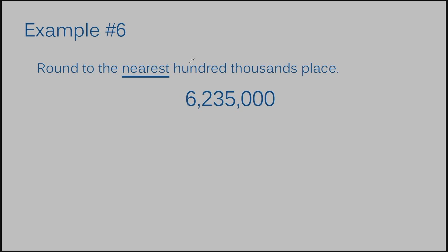Example number 6: round to the nearest hundred thousandths place. The thousandths place is the fourth space in, so the fifth space is the ten thousandths place, and the sixth place is the hundred thousandths place. I'll draw my arrow above that position and underline the space next to it — the underlined space determines what the rounding place does. The number to the right is a 3, which fits the category of 4 or less, let it rest. So we rewrite the number as 6,200,000. The answer to example number 6 is six million, two hundred thousand.